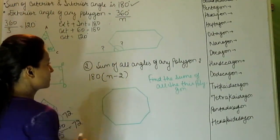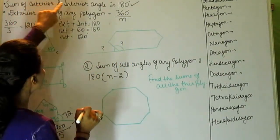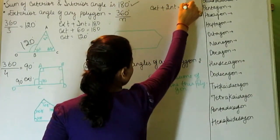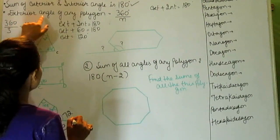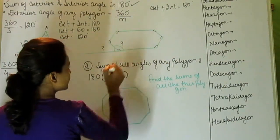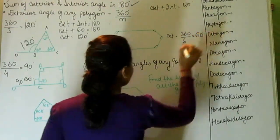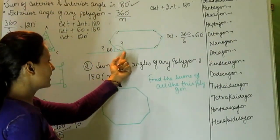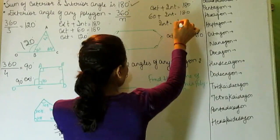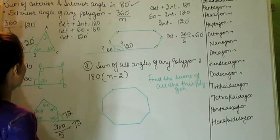Now we have a figure where we are given nothing, but we still have to find the interior angle. We know that exterior plus interior equals 180 degrees. The exterior angle is given as 60 degrees, so the interior angle would be 120 degrees.